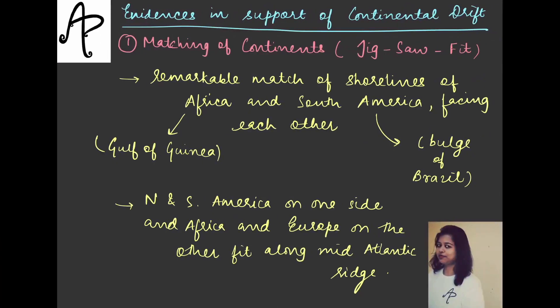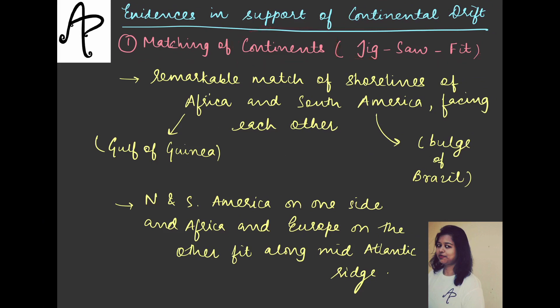Now, what were the evidences proposed by Wegener in support of continental drift? The first of many evidences was about the matching of the continents — kind of like a jigsaw puzzle fit.